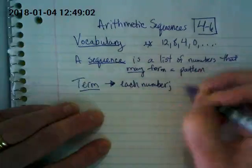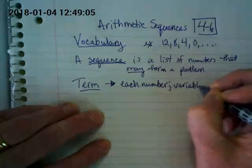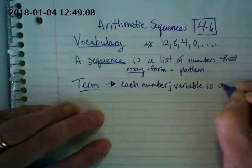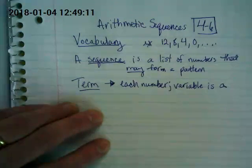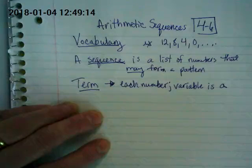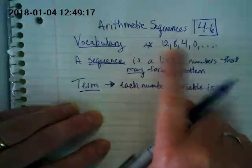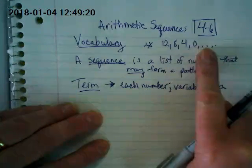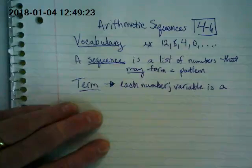We have a special variable that we will be using in formulas for this, and the variable is a lowercase a. So in my example up here, 12 is a term, 4 is a term. We could continue this, and anything we found later would also be a term.